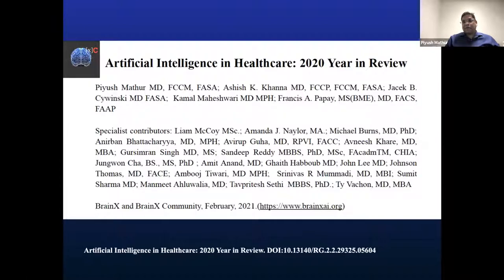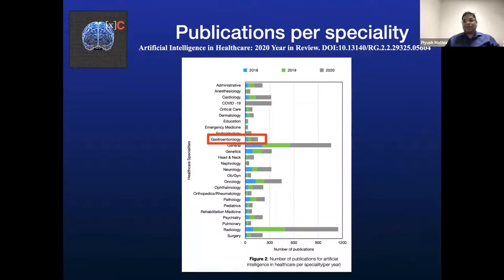Earlier this year, just like prior years, we published the 2020 year-end review — freely downloadable, open access from our website or through ResearchGate. Dr. Gursimran Kocher was one of the co-authors and covered gastroenterology. In this publication, you can see that between 2018 and 2020, the number of GI publications on AI has been expanding at a very rapid pace, truly catching up with great research output.